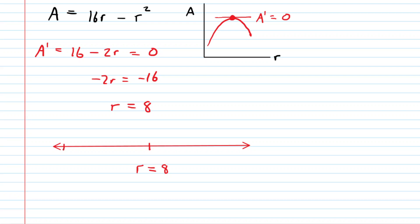Notice the smallest the radius could be would be 0. You can't have a pizza whose radius is less than 0. And so what we'll do is we'll just pick a value between 0 and 8 as well as a value that's greater than 8, and we'll plug it into the derivative and investigate what goes on there. For example, if we pick r is equal to 1 as a test value, we would plug that into the derivative.